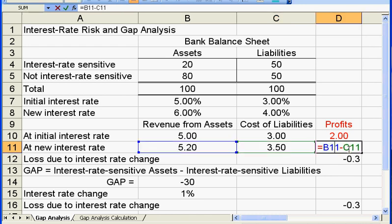And the profit is the difference between 5.2 and 3.5, that is 1.7. And the total profit decreased from $2 to $1.7, that's a decrease of 30 cents.